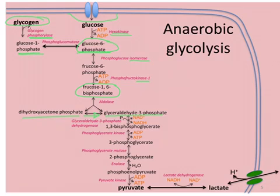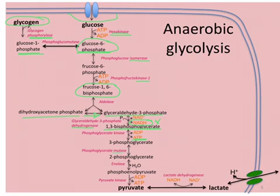The next step is catalyzed by a dehydrogenase because it oxidizes this intermediate and produces an NADH, and that becomes very important for the final step of anaerobic glycolysis. Then we produce our first two ATP, because we have two molecules of this intermediate. Then there's a mutase and a dehydration reaction, and then the final production of two more ATP from two molecules of phosphoenolpyruvate.